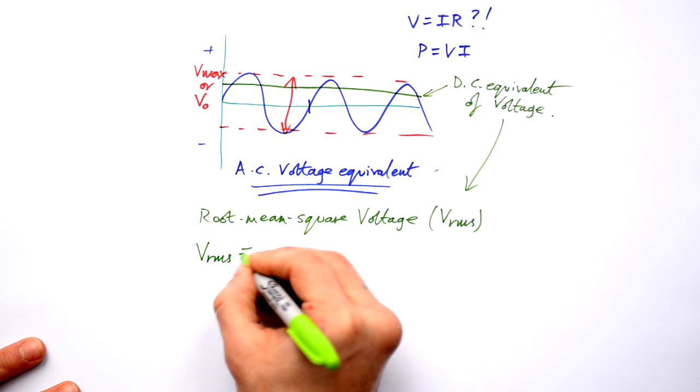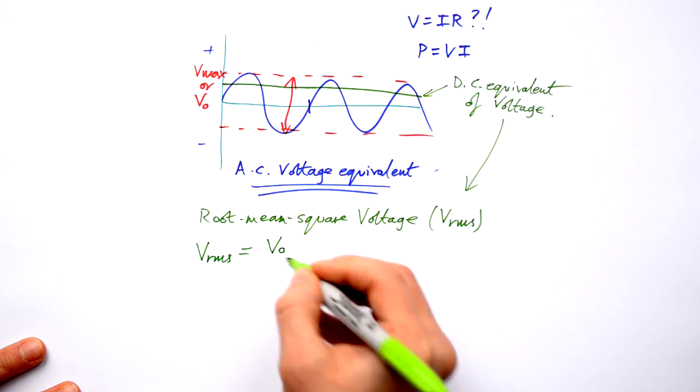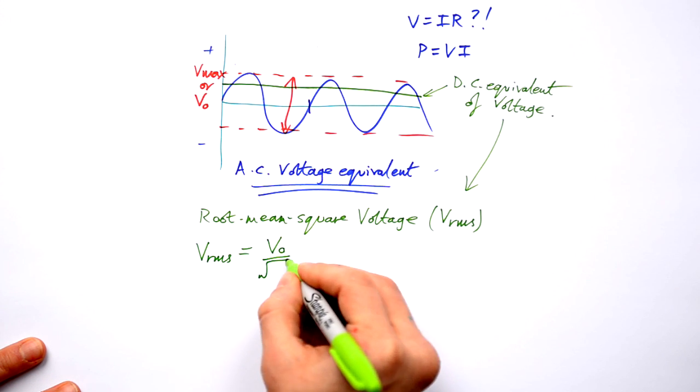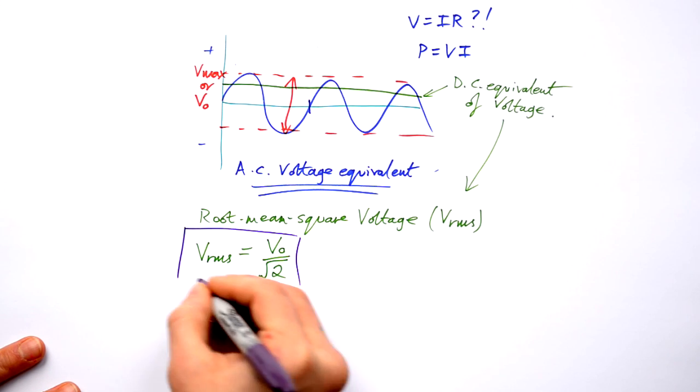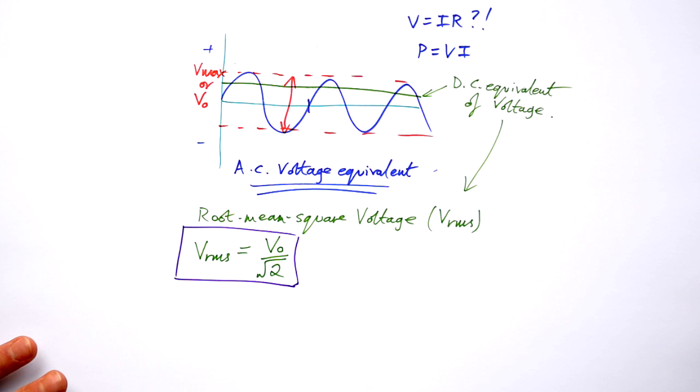VRMS equals the peak voltage divided by root 2. Easy. That is your conversion factor between RMS values and peak values. Same goes for current as well.